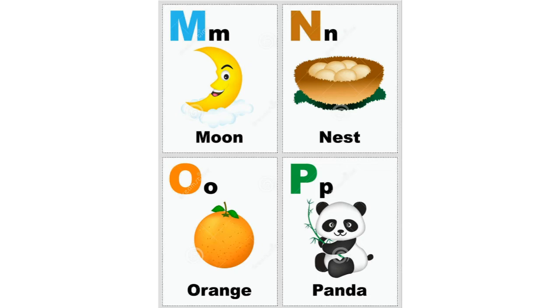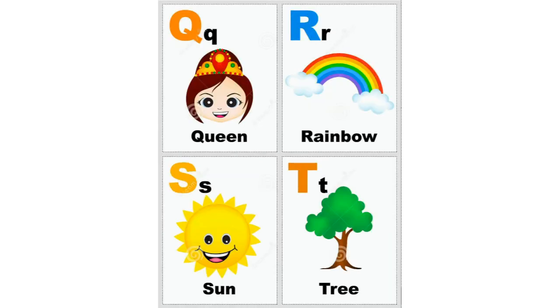O for orange, P for panda, Q for queen, R for rainbow, S for sun.